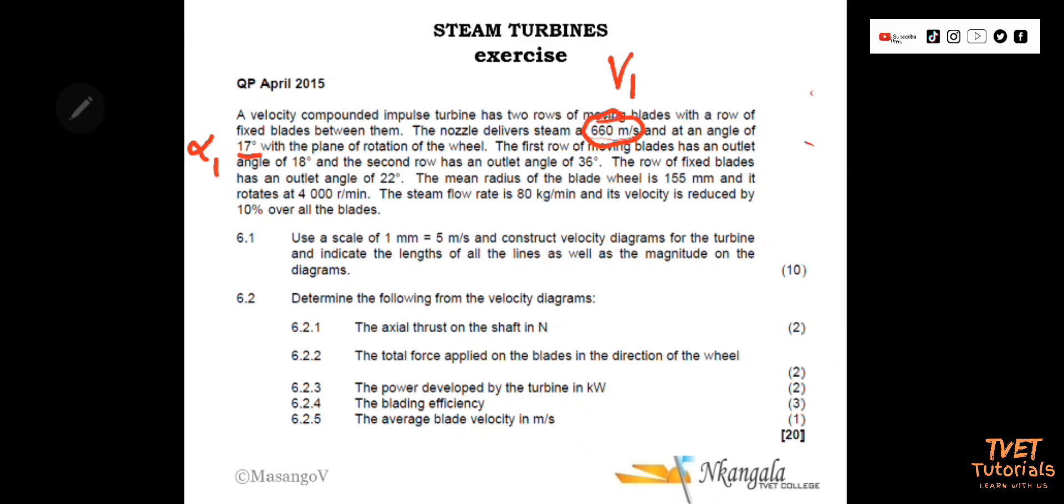The first row of moving blades has an outlet angle of 18 degrees. So outlet angle of the first row is phi 1. The second row has an outlet angle of 36 degrees. Outlet angle of the second row is phi 2.